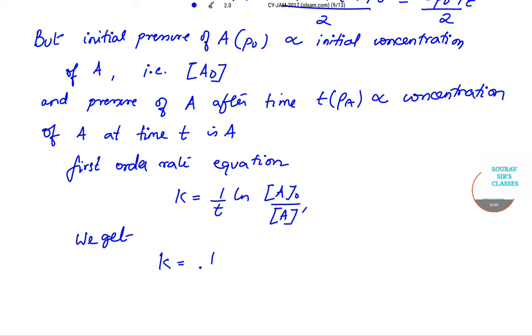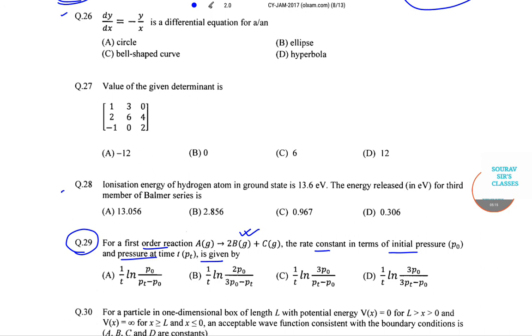Or we get K is equal to 1 by T natural log P0 by 3P0 minus PT by 2. Or we can write this as K is equal to 1 by T natural log 2P0 by 3P0 minus PT. So this becomes the value.